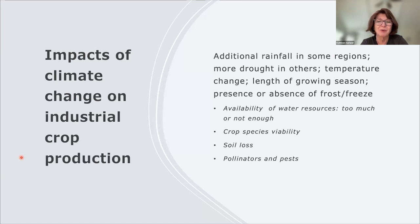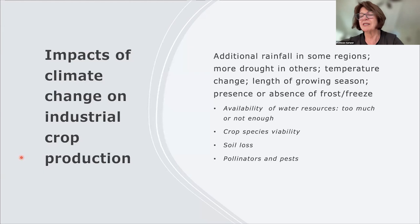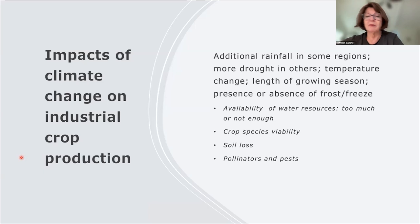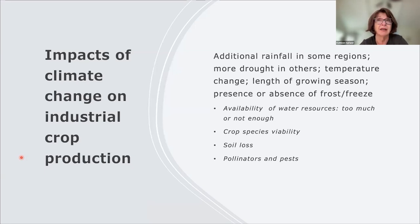Crops are incredibly dependent on water availability, so shifts in water resources determine whether farmers need to irrigate. Irrigation is a large investment for farmers and a large demand on regional water resources. Certain crop species are much more adaptable to climate changes than others. For example, as the climate warms, the areas where you can plant winter wheat tend to move northward, because winter wheat requires winter conditions to grow.